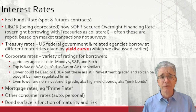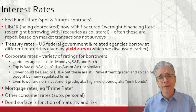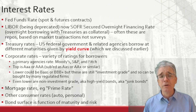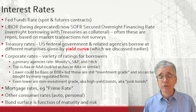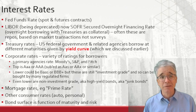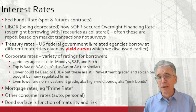Sometimes capitalization is different — sometimes AA1 or a plus. There are a lot of different notches to these ratings. Lower down they could be BAA1 or BBB+, and those are still investment grade. Lower down are non-investment grade, sometimes called high-yield bonds, sometimes called junk bonds. If you're a really well-known corporation with a lot of money in the bank, you can borrow cheap. If you're a little sketchy, then you're going to pay a higher rate.